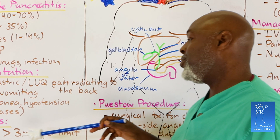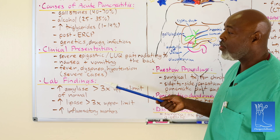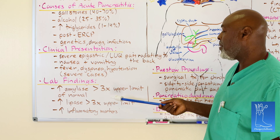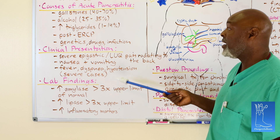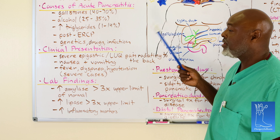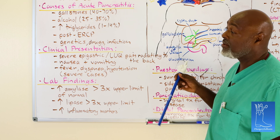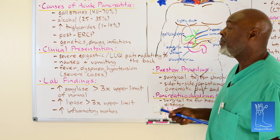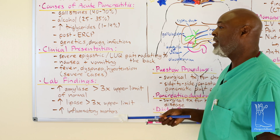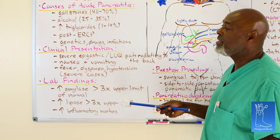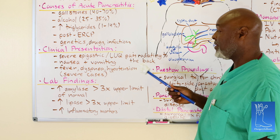On labs, you always see elevated amylase and lipase — one or both — usually about two to three times the upper limit of normal in pancreatitis. You can also see slight elevations in white count. You don't necessarily have to have a fever, and it doesn't necessarily mean necrotizing pancreatitis or infected fluid, but you can still see elevated CRP and other inflammatory markers — pancreatitis can cause those to be elevated.